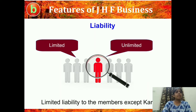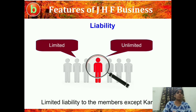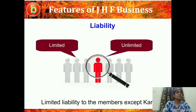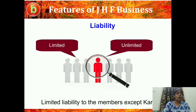The second feature is liability. The liability of the other members is limited, but that of the Kartha is unlimited. The liability of the Kartha is unlimited but that of all the other members is limited. The Kartha is the head and bears everything. Other members have limited liability to the extent of the share they hold in the business — suppose 10 brothers each holding 10% share. But the head has unlimited liability.